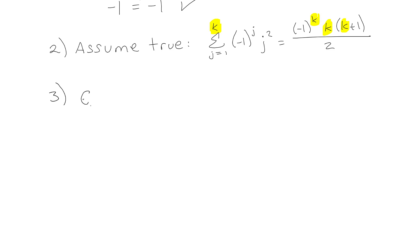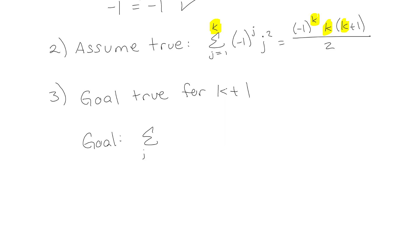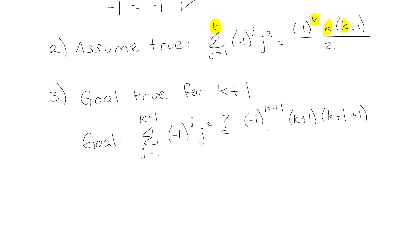Our goal is to show that it's true for k plus 1. So we want to show: is it true that for j equals 1 to k plus 1, the sum of negative 1 to the j times j squared equals the right-hand side with every k replaced by k plus 1? That gives us k plus 1, times k plus 1 plus 1, all over 2. That's our goal.